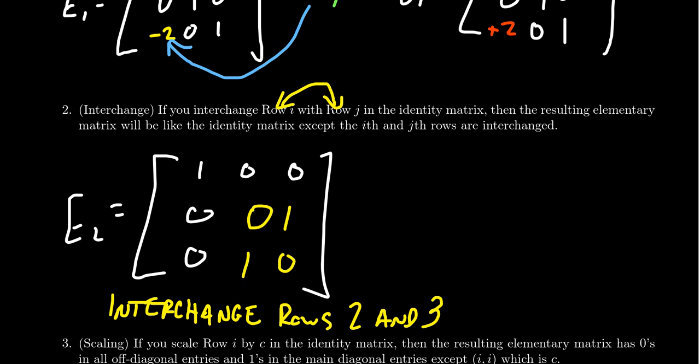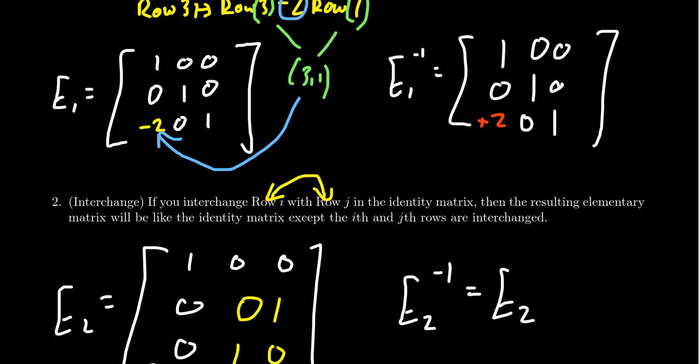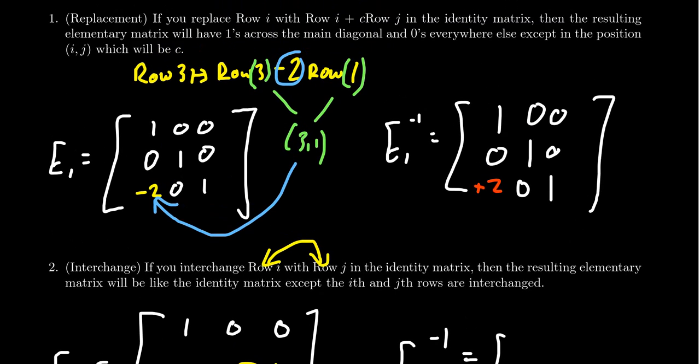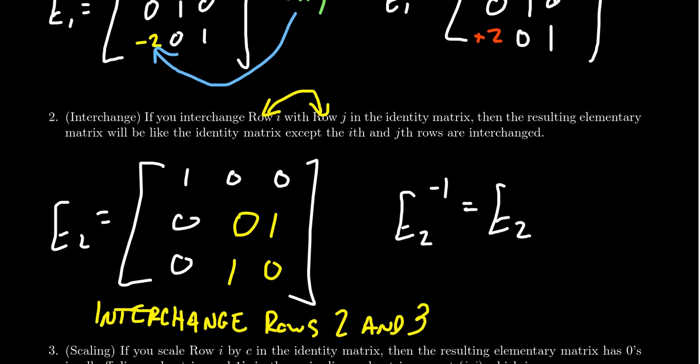These interchange matrices are also non-singular, and the inverse of an interchange matrix is actually itself. How do you undo interchanging rows? You just put them back the way they were — if rows 2 and 3 got swapped, swapping them again puts them back. With replacements, if you subtracted 2 times row 1 from row 3, you undo that by adding back 2 times row 1.